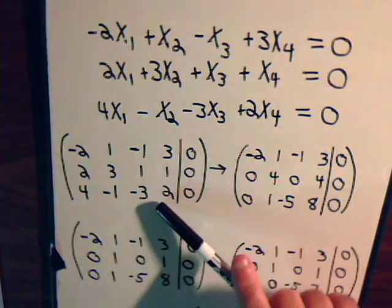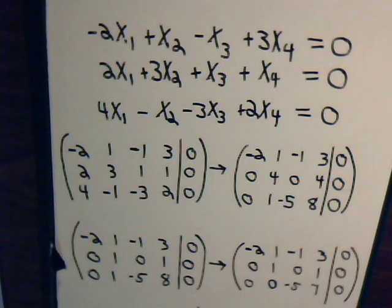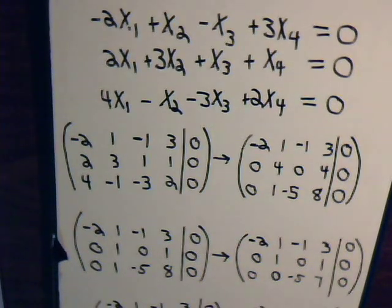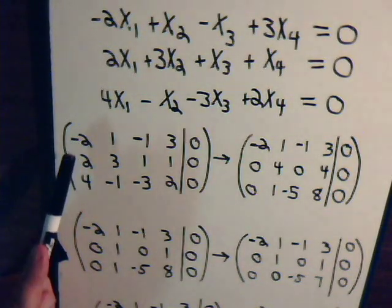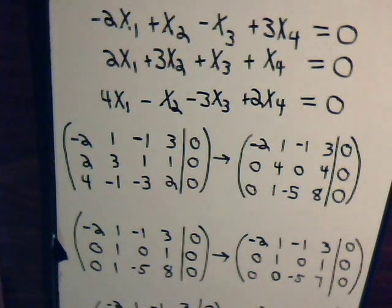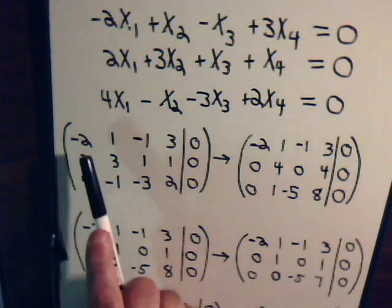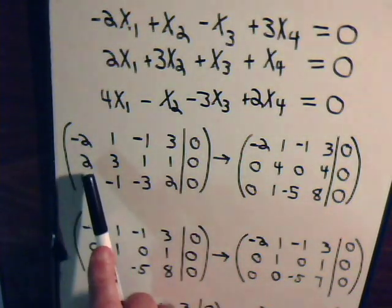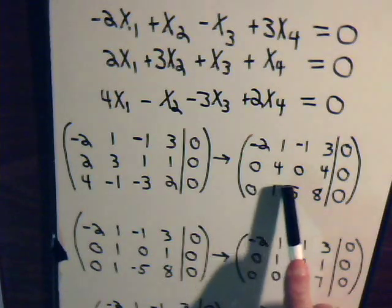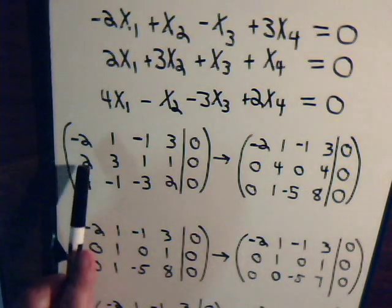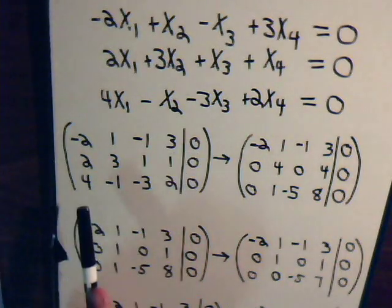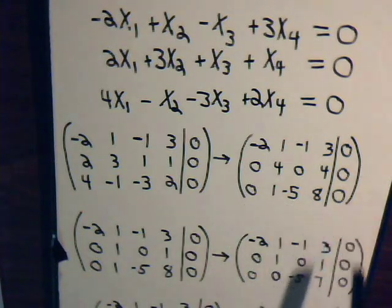Here are the equations represented with the augmented matrix as we've done in previous videos. We always want to make this a one. All you have to do is add this row to make that zero, and multiply by two to make that zero. If we add this row to this row to make that zero we get these numbers, and if we multiply this whole row by two and add it to this row so that this comes out zero, then we get this set of numbers.